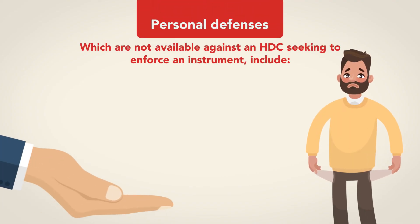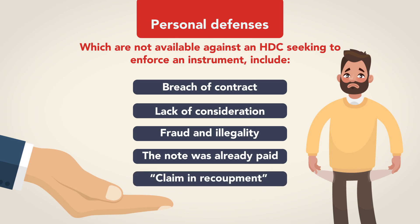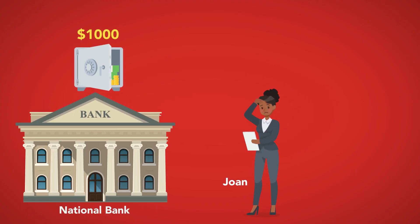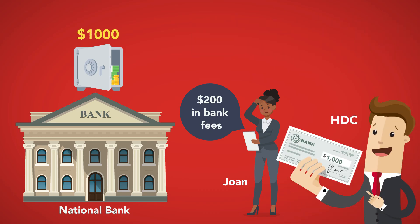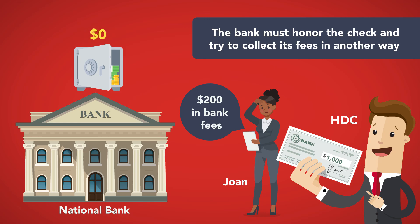Personal defenses, which are not available against an HDC seeking to enforce an instrument, include breach of contract, lack of consideration, fraud and illegality that don't rise to the levels described earlier, and that the note was already paid. A claim in recoupment, which means an offset, is also not available against an HDC. For example, if Joan has $1,000 in her account at National Bank but owes $200 in bank fees, the bank can offset the debt by deducting $200 from her account. But if a holder in due course presents a $1,000 check written by Joan and the account has the requisite $1,000 in it, the bank must honor the check and try to collect its fees from Joan in another way.